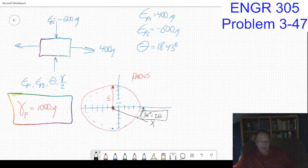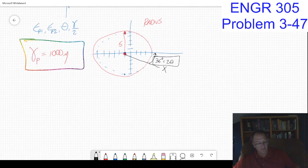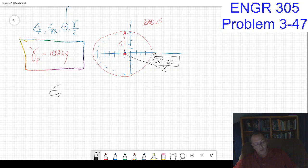Now I can start and do the trig. If I want to figure out what epsilon_x is, it's going to be equal to 500 times cosine of 2*theta, that 36 degrees.